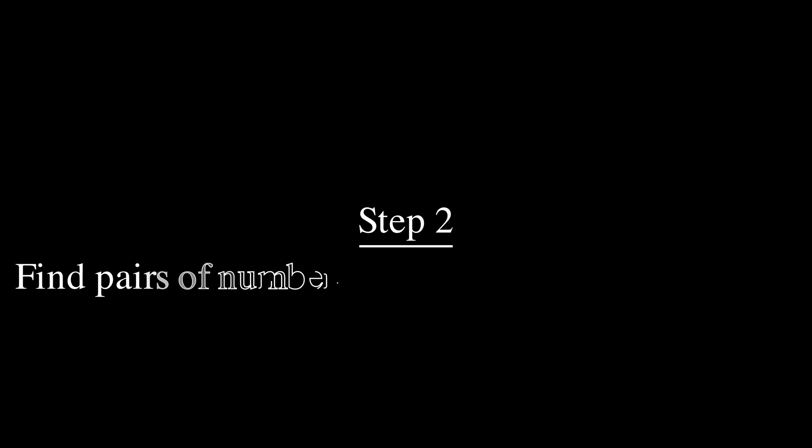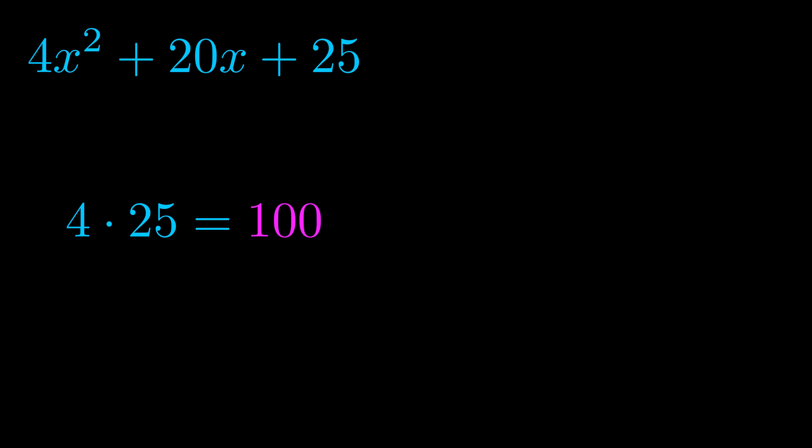Step two is to try to find all of the pairs which multiply to this number. Now it turns out you don't really need to find all of them but go ahead and write down as many numbers as you can that multiply to the magenta value for now. Pause the video and resume when you're ready to continue.